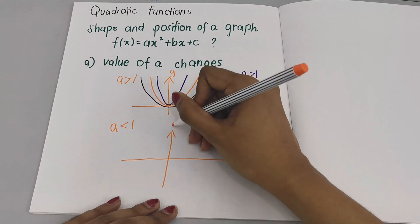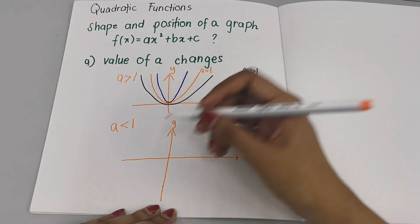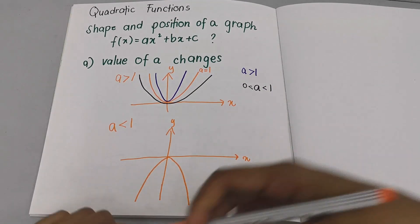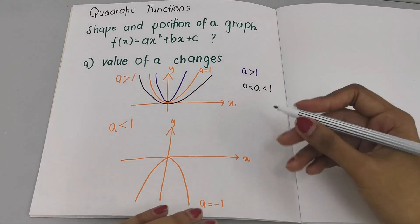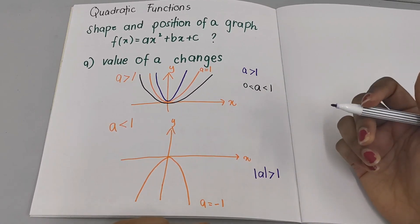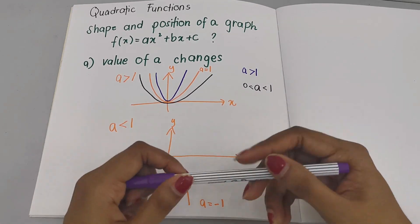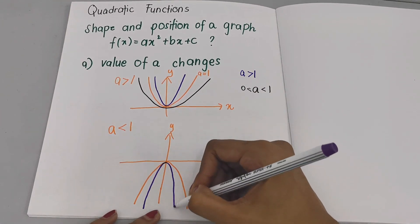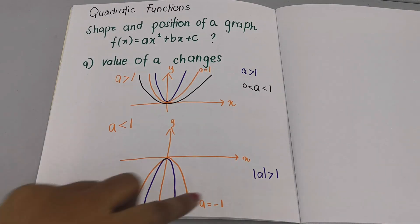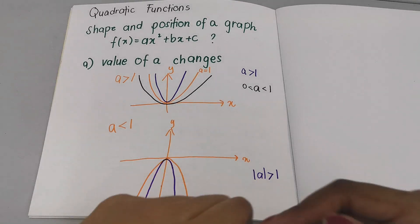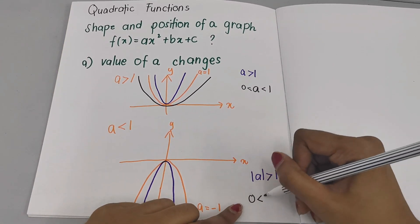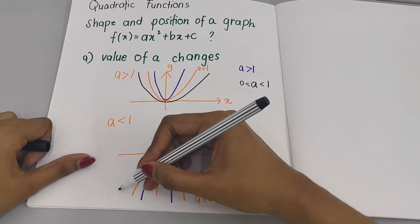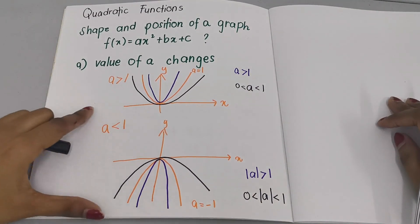Of course, automatically your graph will be a sad-face shape. So let's say A equals negative 1 — it's like this. What happens when A is less than negative 1? Automatically your graph will become smaller. And when the value of A is between negative 1 and 0, the graph shape becomes bigger. So this is how the graph changes when the value of A changes.